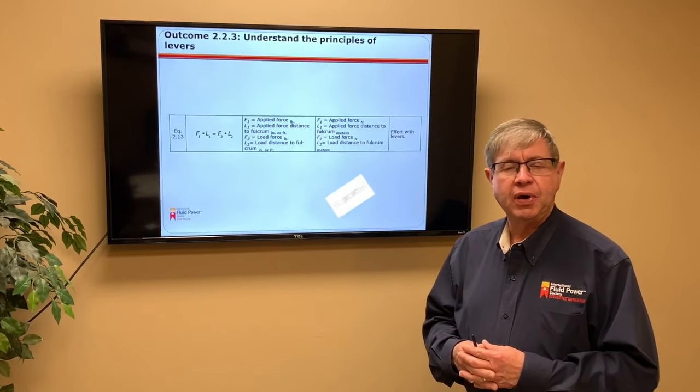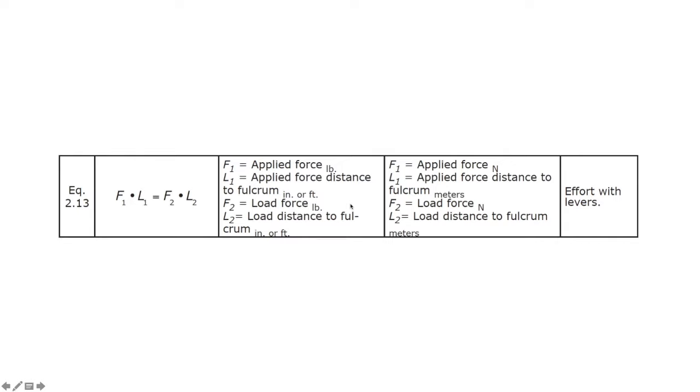That's illustrated in equation 2.13 showing that the force F1 times L1, or length one, which is defined as the applied force times the applied force distance to the fulcrum, in units of inches or feet, and force in pounds, is equal to the force of the load times the load distance to the fulcrum. As I said before, this is an equalization of one side equal to the other. Whatever I do to one side must be repeated to the other side.